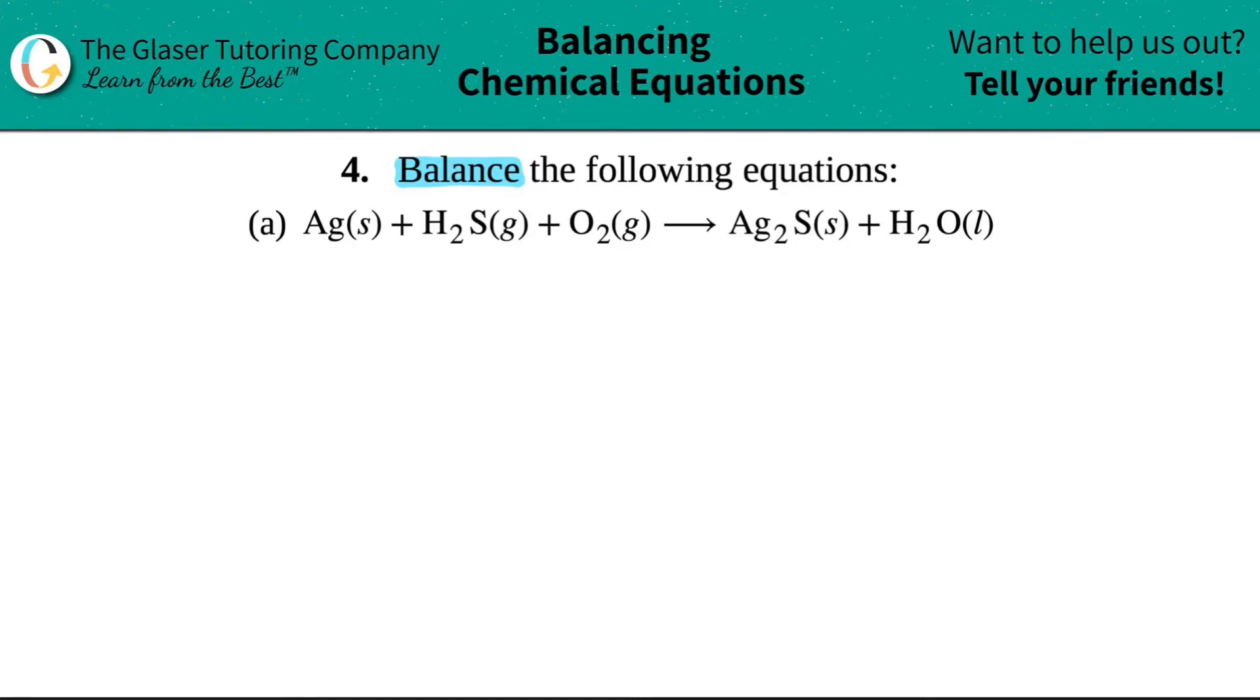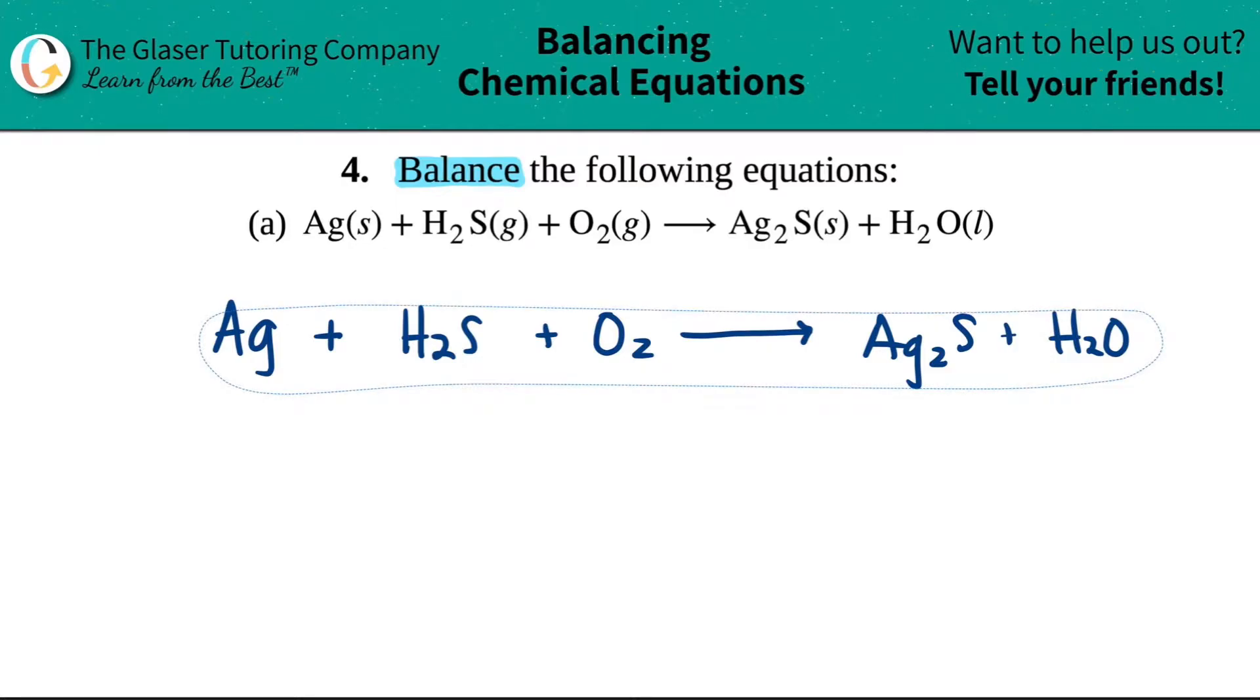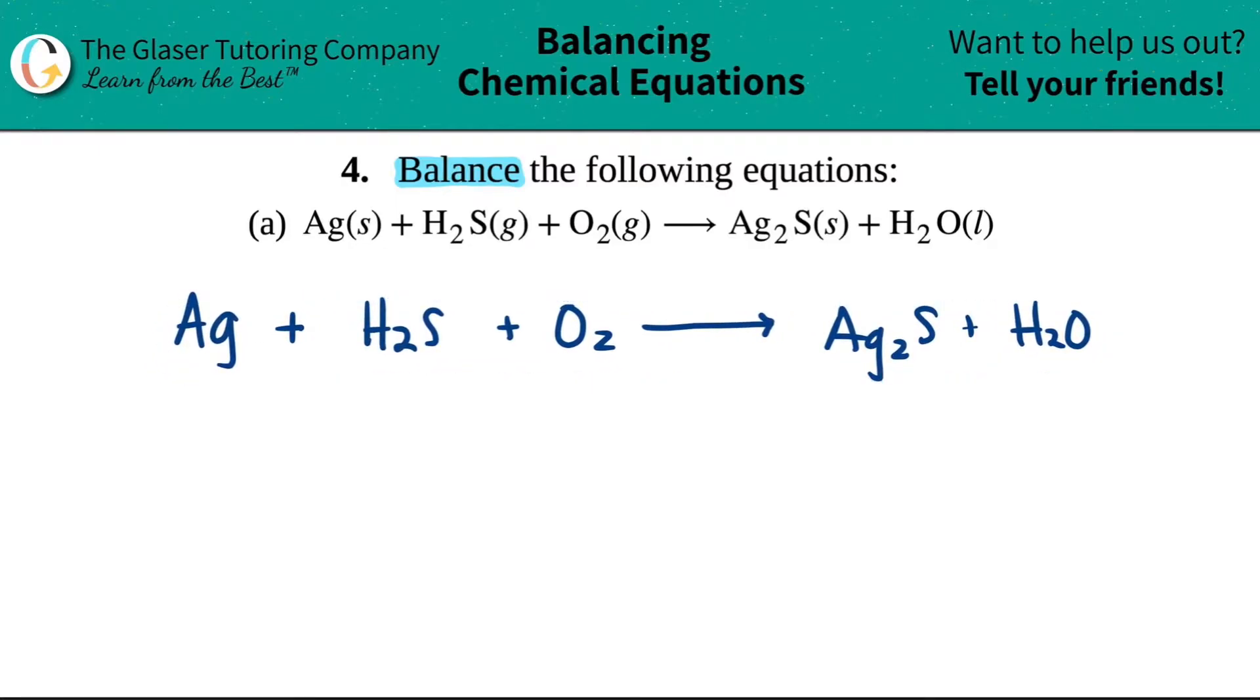So the first thing that I'm going to do is just rewrite this equation because they don't really give me a lot of space here to work with. So I'm just going to say that we have Ag plus H₂S plus O₂ all being yielded or produced. Whenever you see this yield sign, it just means that you're making Ag₂S plus H₂O. That looks pretty nice and neat.